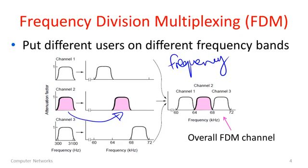Moving this band around in absolute frequency space does nothing to the data rate — it keeps it the same. As we add all these different transmissions together onto the same wire, we have three channels in three different frequency bands which correspond to the original transmissions. So now we're sharing the channel in frequency space.